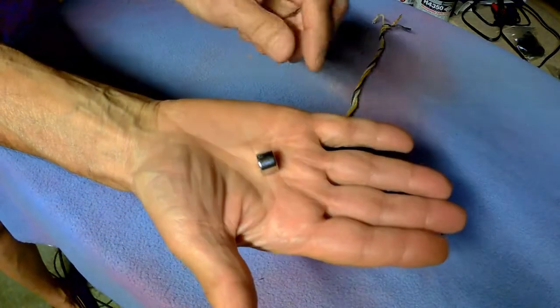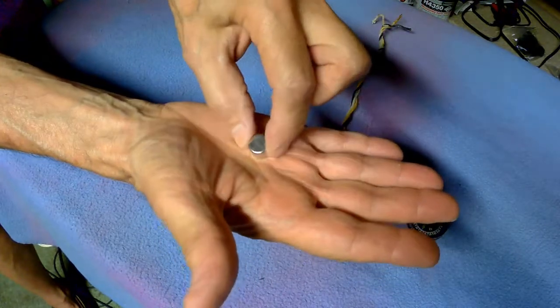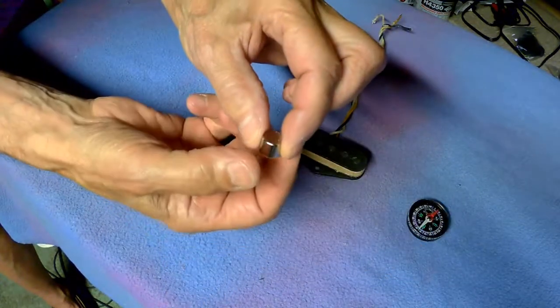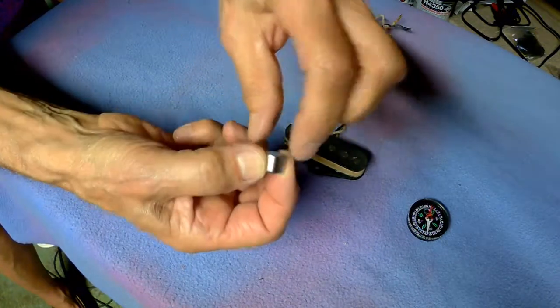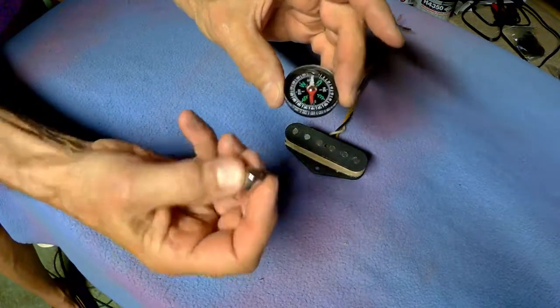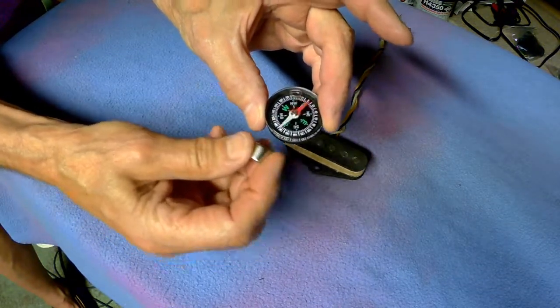So how do we do it? We take a neodymium magnet. This one happens to be half-inch by half-inch. It's a disc. The disc sides are axially magnetized, and if we look at one side, this is going to be south, and if we look at the other side, this is going to be north.